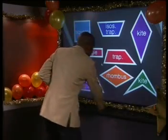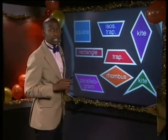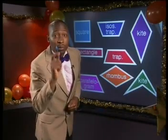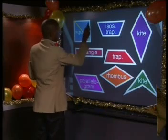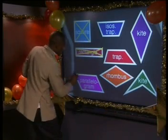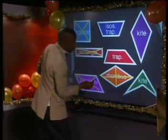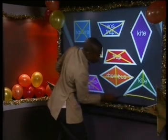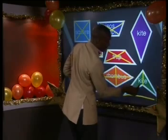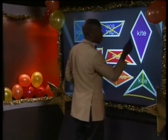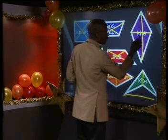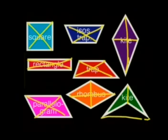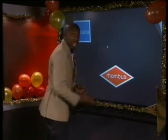Which of these shapes have diagonals that bisect each other at 90 degrees — in other words, they are perpendicular bisectors of each other? It is true for the square, but not the rectangle or the parallelogram. It is true for the rhombus. For both trapeziums it's not true. For the concave kite it's not true because the two diagonals do not intersect. For the convex kite, the diagonals are perpendicular but this diagonal is not cut in half. So only the square and the rhombus have perpendicular bisectors.